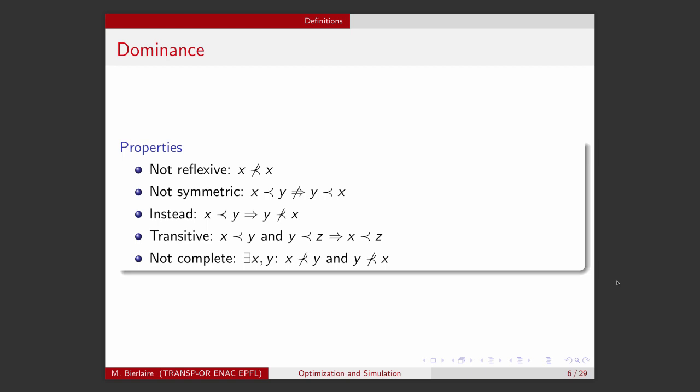What are the properties of this dominance operator? First, it's not reflexive. So, a solution X does not dominate itself. It's not symmetric. If X dominates Y, it does not imply that Y dominates X. It makes sense, right? Instead, if X dominates Y, it implies that Y does not dominate X. It is transitive. If X dominates Y and Y dominates Z, it implies that X dominates Z. And something important is that it's not complete. So, for two different solutions X and Y, it may happen that X does not dominate Y and Y does not dominate X. And we'll see examples of this.